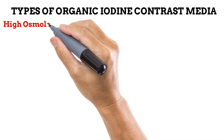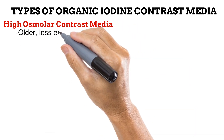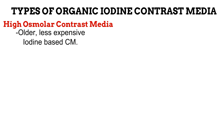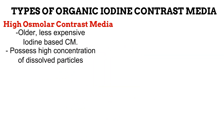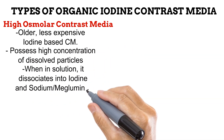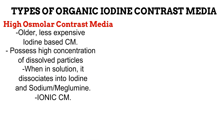That takes us to high osmolar contrast media. These were the first type of organic iodine contrast media to be produced and are currently the less expensive type on the market. As their name implies, they have a high osmolality. When high osmolar contrast media is introduced into a solution, it breaks down into an anion and a cation — the anion is usually iodine, while the cation is either sodium or meglumine. This dissociation into ions gives it the name ionic contrast media. This dissociation into two particles means a high concentration of particles is present, which explains the high osmolality.